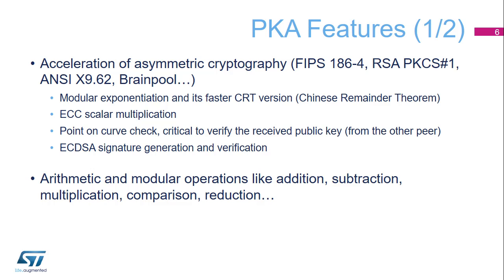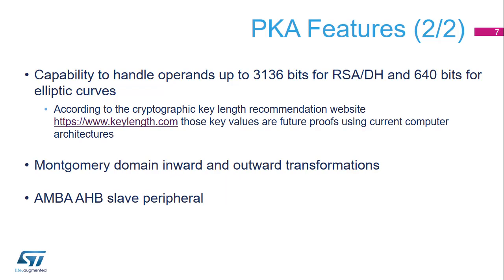Supported algorithms include modular exponentiation, CRT exponentiation, RSA cryptography, Elliptic Curve Cryptography (ECC), Digital Signature Algorithm (DSA), and Elliptic Curve DSA (ECDSA). The Public Key Accelerator (PKA) is used to accelerate RSA (Rivest, Shamir, and Adleman), Diffie-Hellman (DH), as well as Elliptic Curve Cryptography (ECC) over prime field operations.